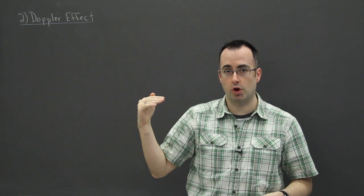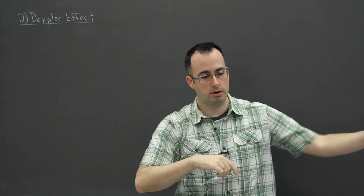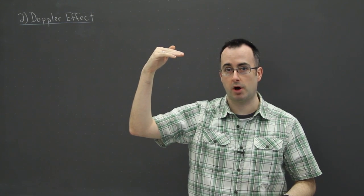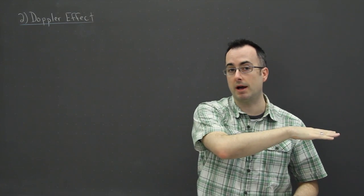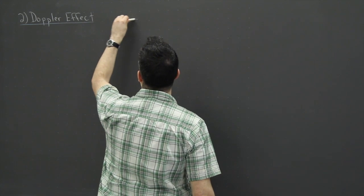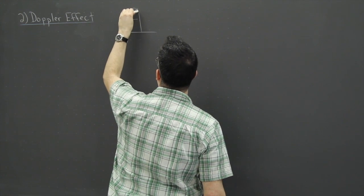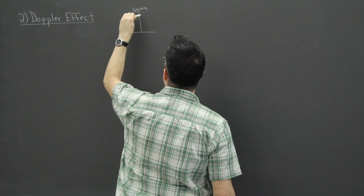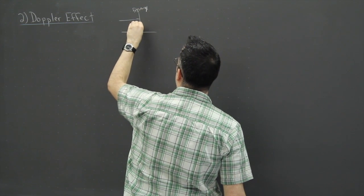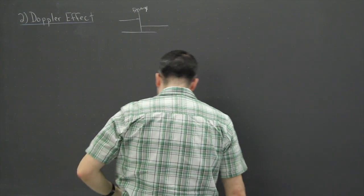Now the sound itself — do you notice it sort of goes down in pitch? As it comes towards you it's a constant higher pitch, and as it passes by it'll be a lower pitch but constant. So if this axis represents frequency and this is time, it would be something constant and high, and then as it passes you it goes lower — something constant and lower.